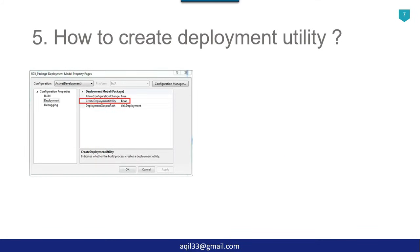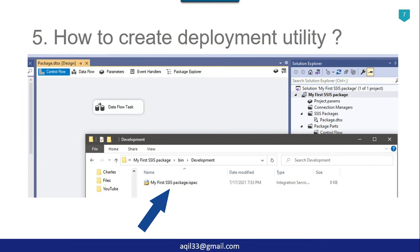The next question is: how do you create the deployment utility? In previous versions of SSIS like 2008 R2, in Solution Explorer you right-click on the project name, select Properties, and on the property page under Configuration Properties click on Deployment. Here you need to set 'Create Deployment Utility' to true, as you can see in this particular image. However, in the latest versions of SSIS like Visual Studio 2019 or 2017, when you build the SSIS package it automatically creates the deployment utility. The extension of the deployment utility will be the project name dot ispac file, as shown in this image. The ispac file is stored in your SSIS project's bin folder and then the deployment folder.